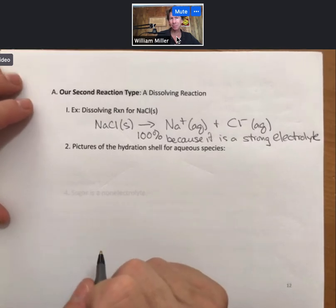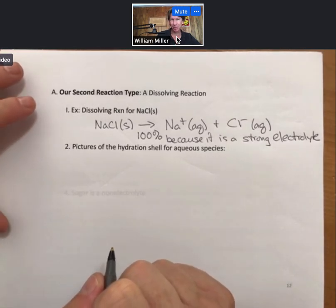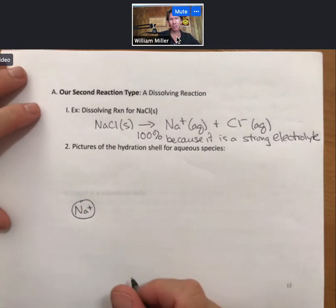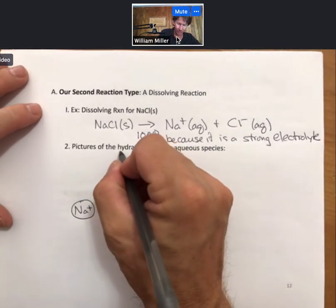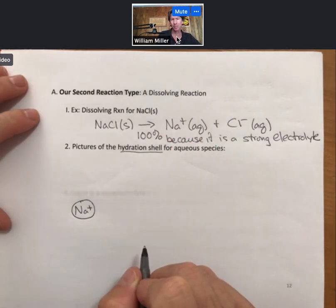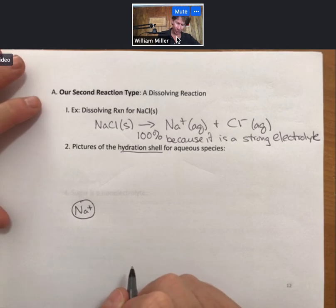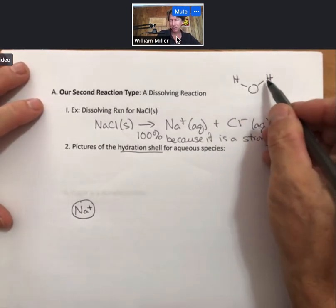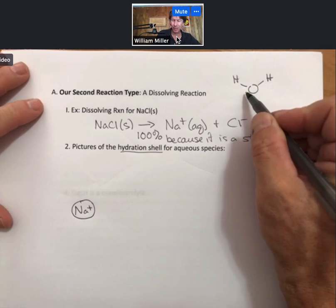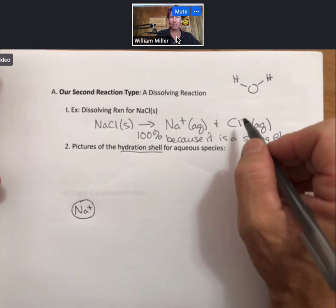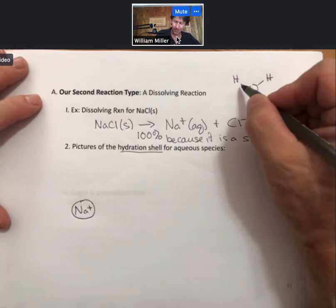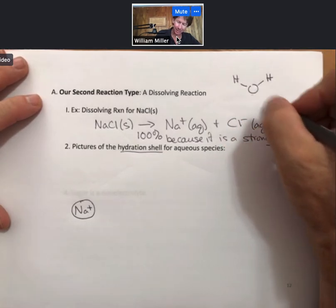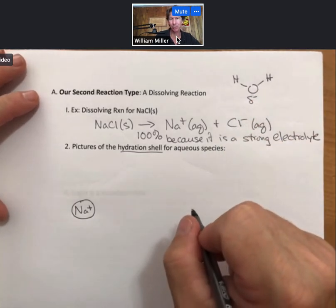We're going to talk about what it means to be in the aqueous phase. When something is dissolved, we look at the sodium ion. The sodium ion when dissolved in water will have what's called a hydration shell of water molecules around it. Water itself has a bonding structure — a Lewis structure — and as most people know, it has a slight negative charge around the oxygen, represented by the lowercase Greek letter delta minus (δ−).